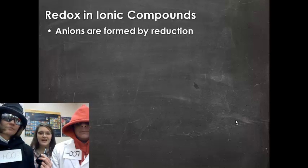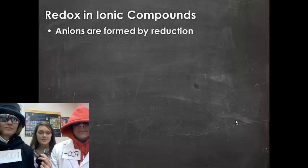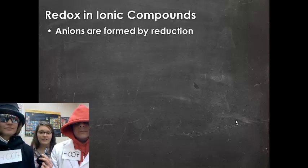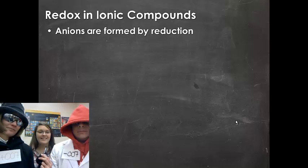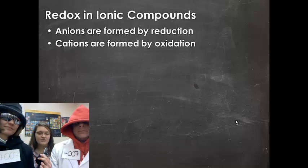We're going to be looking today at ionic compounds, which as you recall are those compounds formed between positive and negative ions. Those negative ions — the anions — are going to be formed by reduction. And our positive ions, or our cations, those are going to be formed by oxidation.